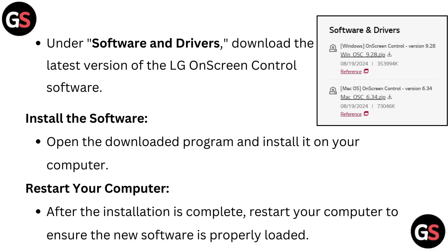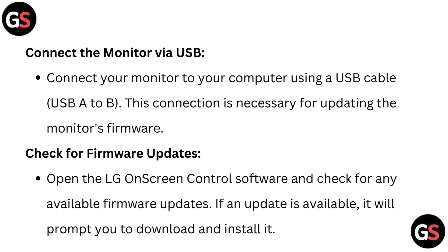Install the software by opening the downloaded program and installing it on your computer. Restart your computer after installation is complete to ensure the new software is properly loaded. Connect your monitor to your computer using a USB cable (USB-A to USB-B) — this connection is necessary for updating the monitor's firmware. Open the LG on-screen control software and check for any available firmware updates. If an update is available, it will prompt you to download and install it.